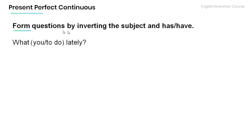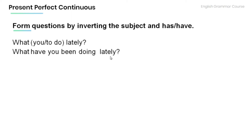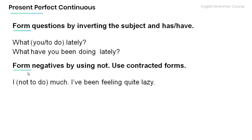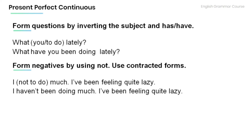Remember that we form questions by inverting the subject and has or have. Now read the following question and provide the present perfect continuous form: What have you been doing lately? And make sure to form negatives using not with contracted forms: I haven't been doing much — I've been feeling quite lazy.